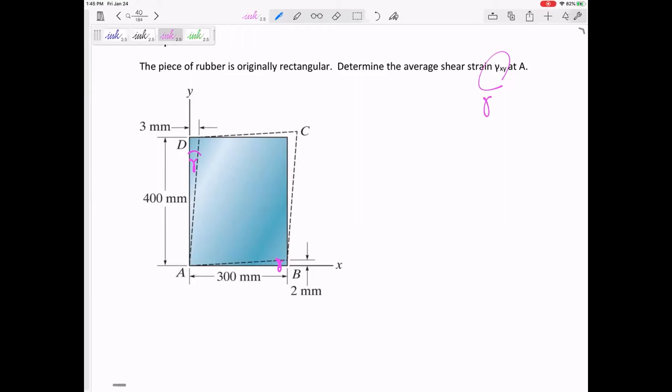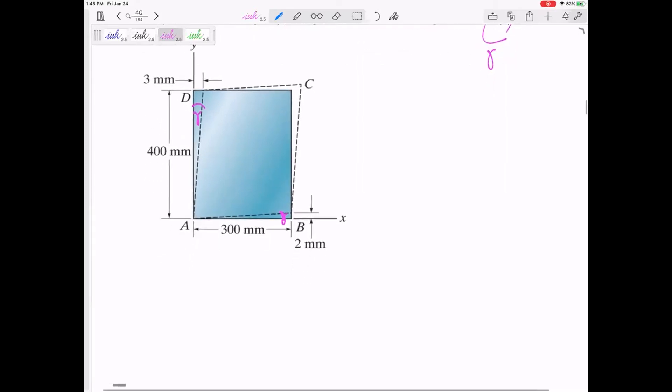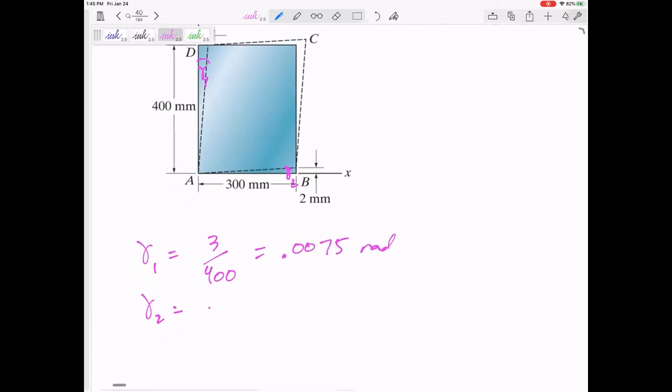So let's call this gamma one and gamma two. Gamma one, I really want to put tangent equals three over 400, but I don't have to put tangent. It's just equal to three over 400, so this would be 0.0075 radians.